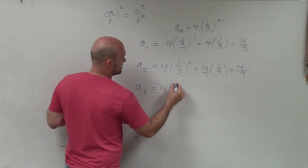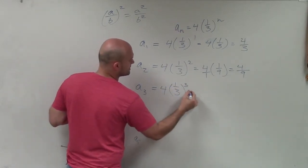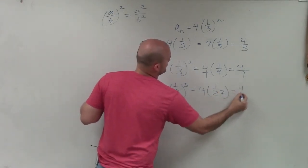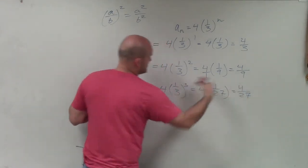For a sub 3, we have 4 times 1 third cubed, that's going to be 4 times 1 over 27, which equals 4 over 27.